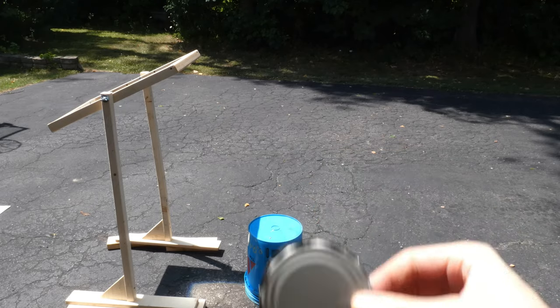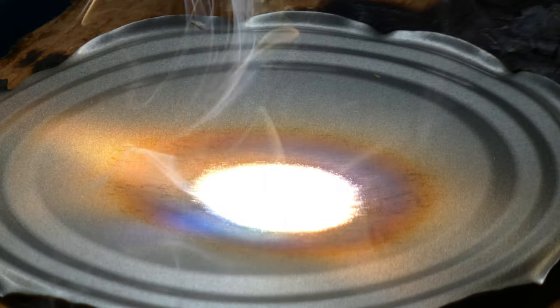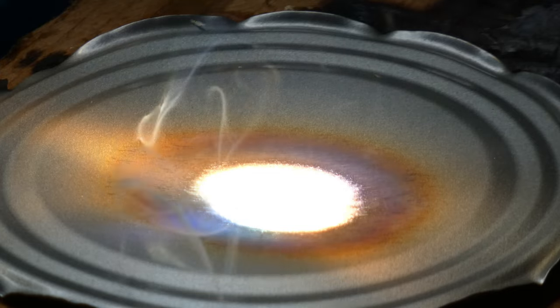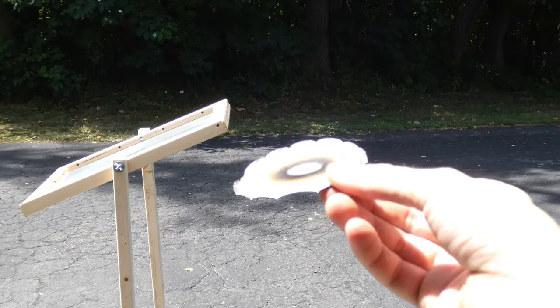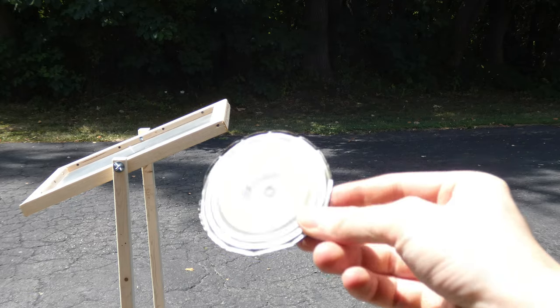Next up, tin can top. If you notice the thing is just like glowing orange hot, pretty wild, definitely don't want to touch it. But sadly it didn't punch a hole in it but it did warp it and leave it like a nasty bruise.